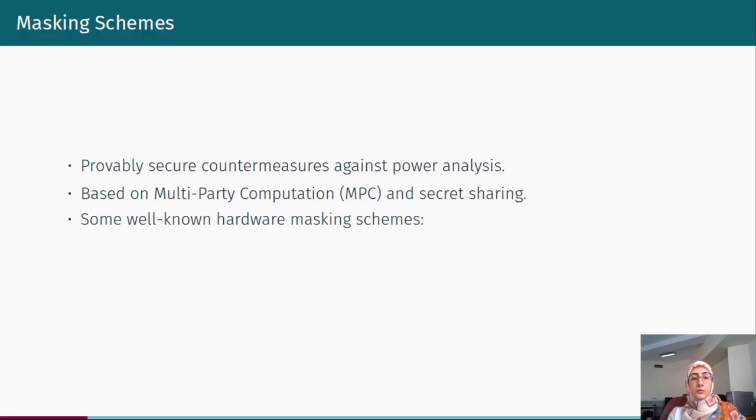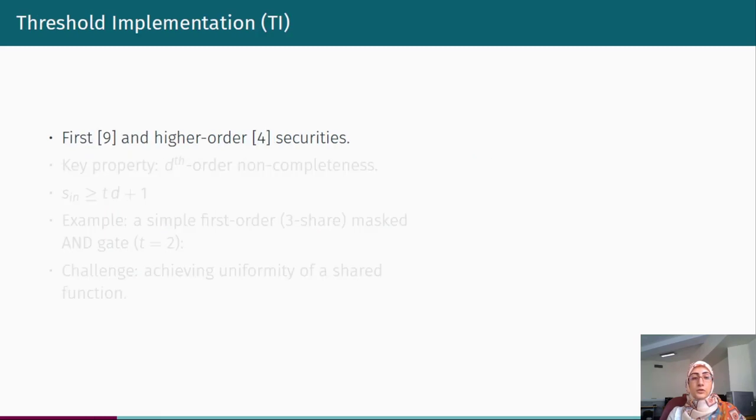Masking schemes are provably secure countermeasures against power analysis. They are based on multi-party computation and secret sharing. Two of the most famous hardware masking schemes are threshold implementation and domain-oriented masking. The threshold implementation scheme was firstly introduced for first-order security and then it was extended to higher orders. However, later it was shown that the proposed extension only provides univariate security.